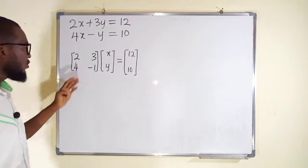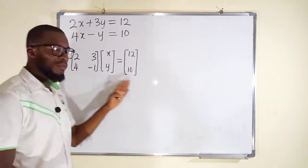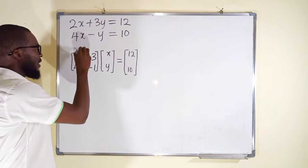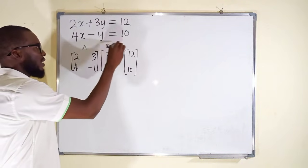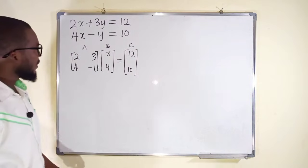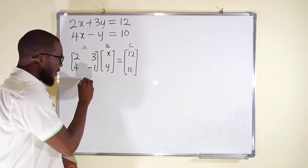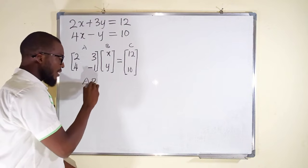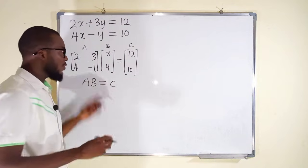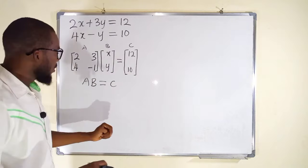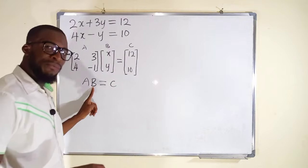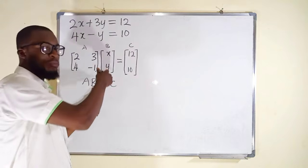So we are going to represent each of these matrices by a variable. Let's call this one A, let's call this B, and let's call this C. This means that matrix A multiplied by matrix B is equal to matrix C, according to this substitution. But we are interested in knowing B, so we are going to solve for B, which represents our unknown variables.